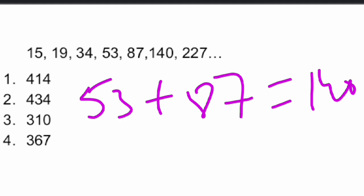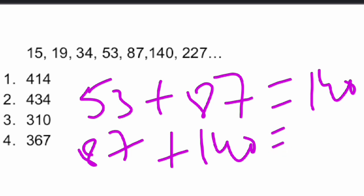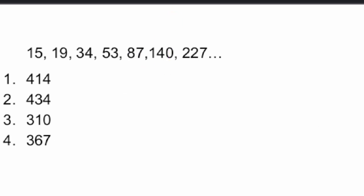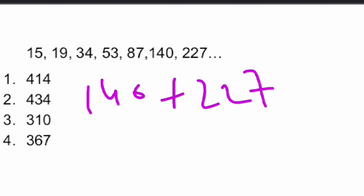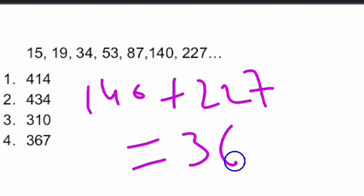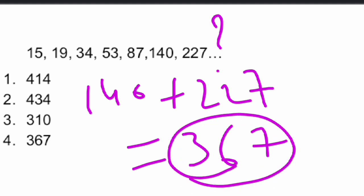Continuing: fifth number plus sixth number gives the seventh number. Then sixth number plus seventh number gives the eighth number — which is the blank we need to find. So 140 + 227 = 367. Our answer is 367, which is option 4. Option 4 is the right answer.